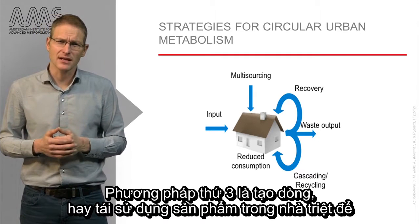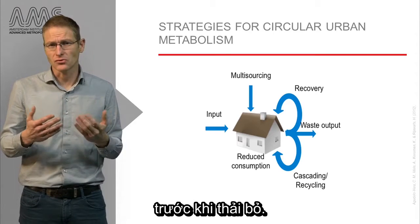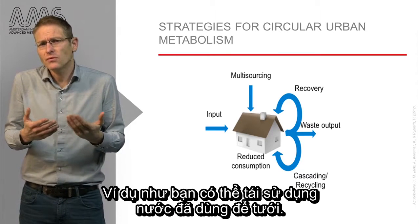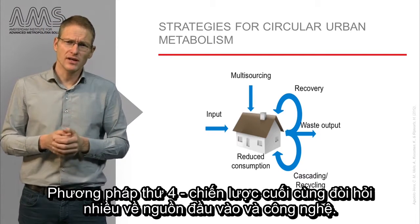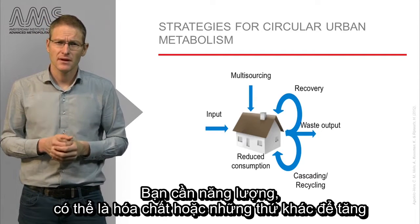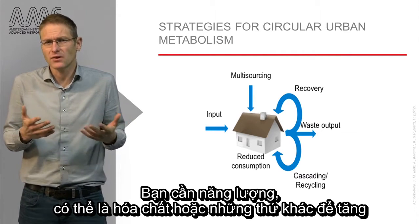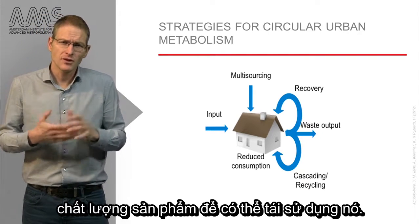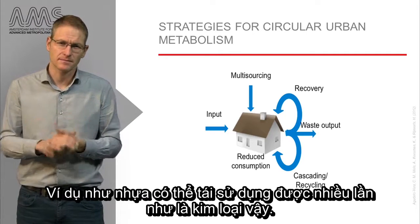The third method is cascading or reusing the products at the quality they exit your household. So you could, for instance, think about reusing water for irrigation. The fourth and final strategy requires much more inputs and technology — that is recovery. Here you need energy, possibly chemicals or other things to upgrade the quality of a product and reuse it again. For instance, plastics can be reused over and over again as well as metals.